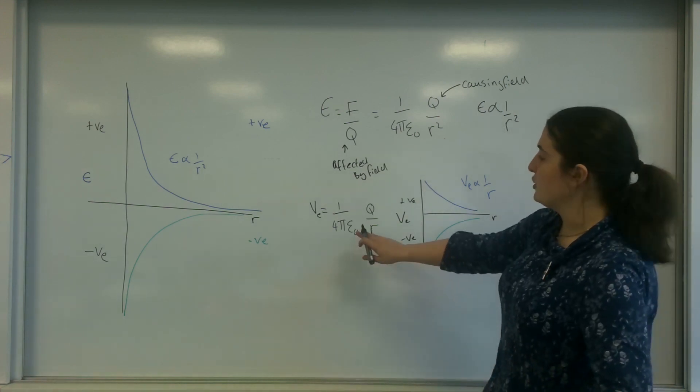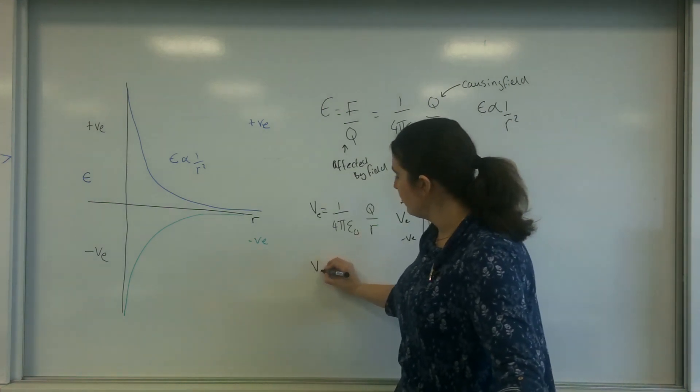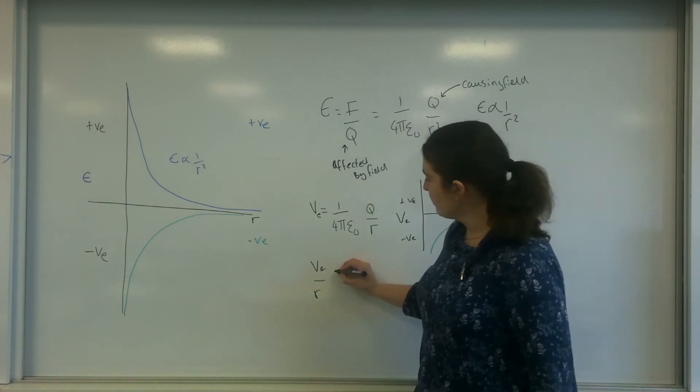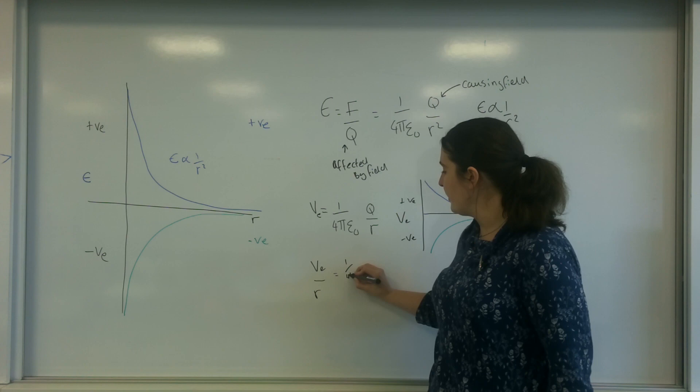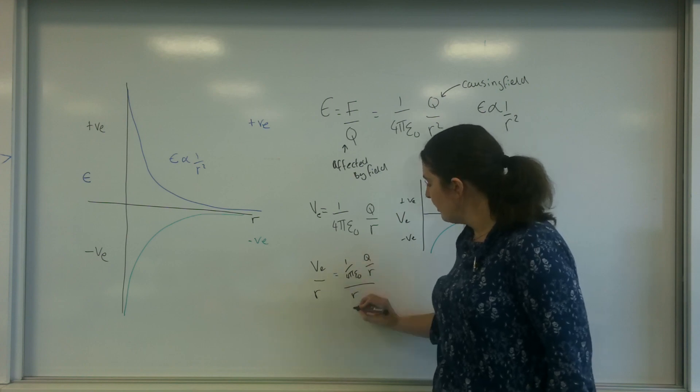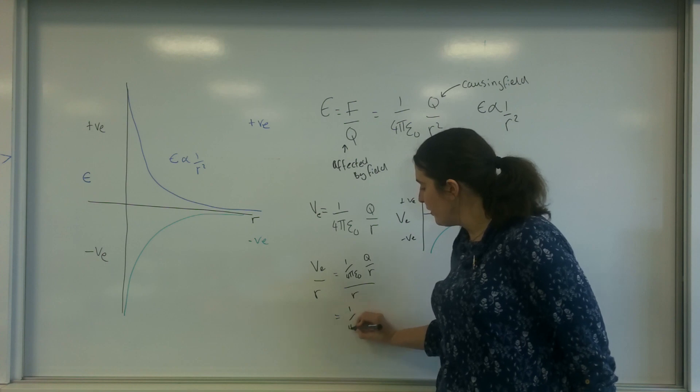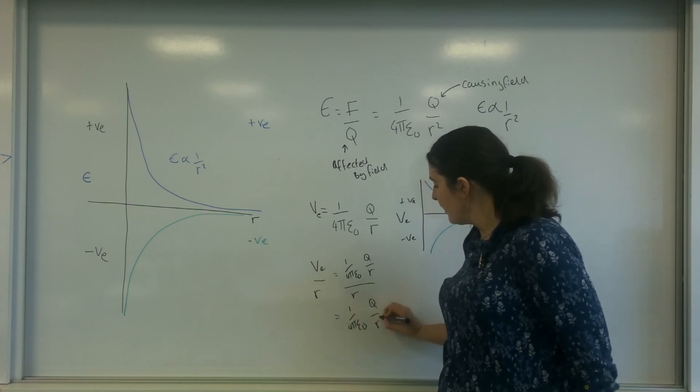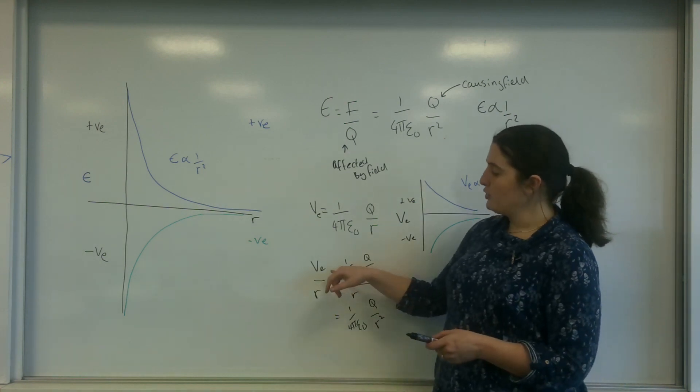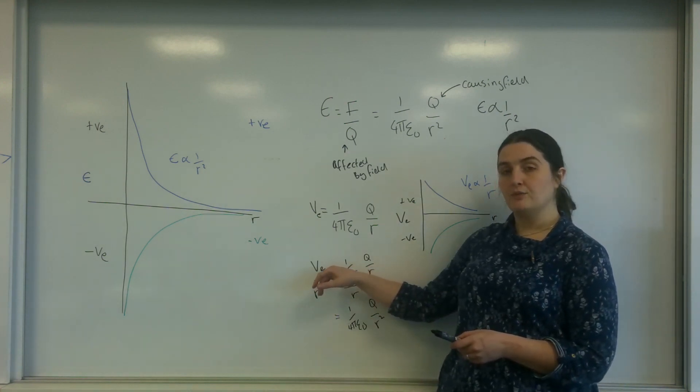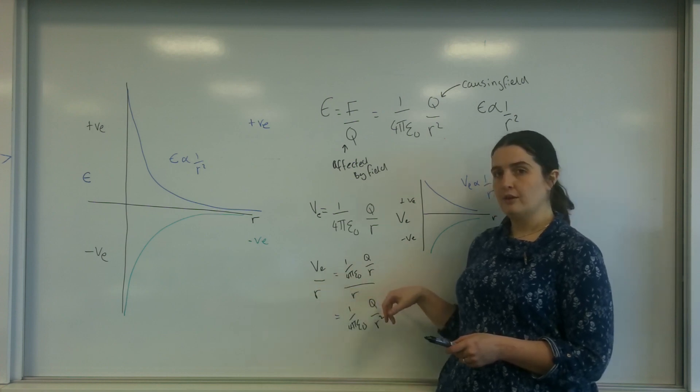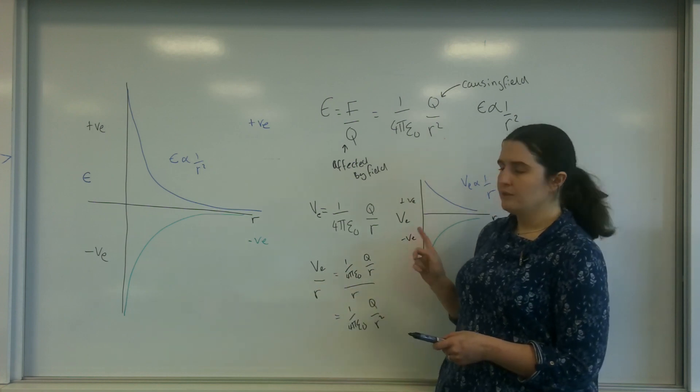If I took this potential, electric potential, and I divided it by r, so I'm going to go 1 over 4 pi epsilon 0 q over r all over r, I would end up with 1 over 4 pi epsilon 0 q over r squared. So what this is saying here is if I took the potential at a point and divided it by the radius at that point, I could work out the field strength.